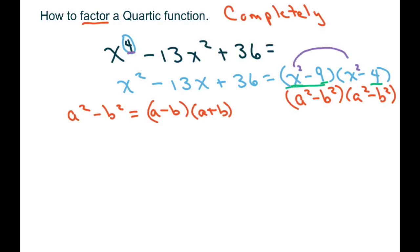So for this first piece, since they're both perfect squares, my a would be x, my b would be 3 because 3 squared is 9. So you're going to do x minus 3, x plus 3.